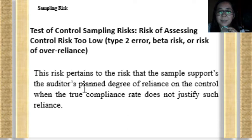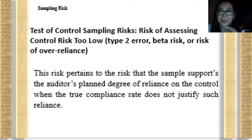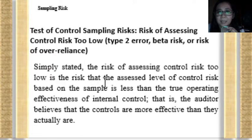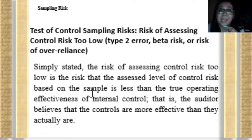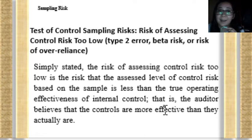This risk pertains to the risk that the sample supports the auditor's planned degree of reliance on the control when the true compliance does not justify it. The auditor assessed control risk too low when in fact it is high. Simply stated, the risk of assessing control risk too low is the risk that the assessed level of control risk based on the sample is less than the true operating effectiveness — the auditor believes the internal controls are more effective when actually they are not.